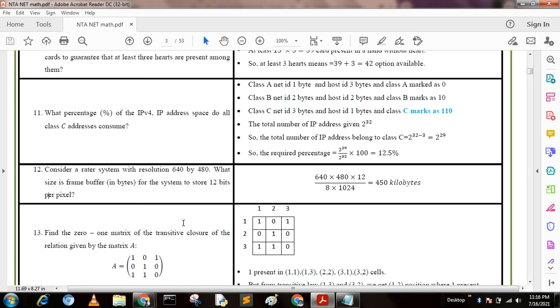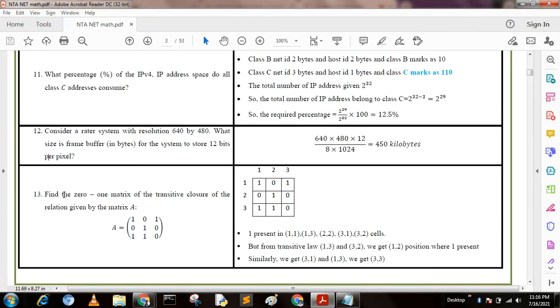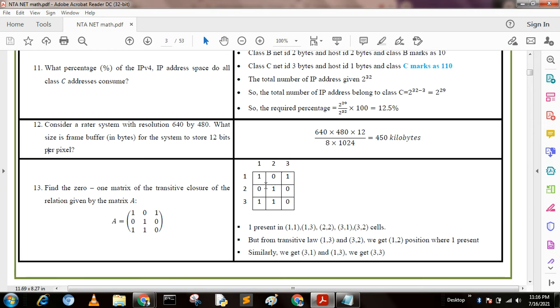Next question: Find the 0-1 matrix of the transitive closure of the relation given by matrix A. We find where 1 is present and perform different set theory operations. Where 1 is present: (1,1), (1,3), (2,2), (3,1), (3,2) locations.